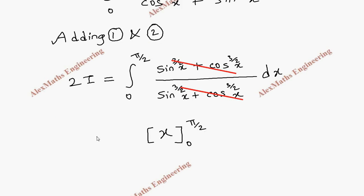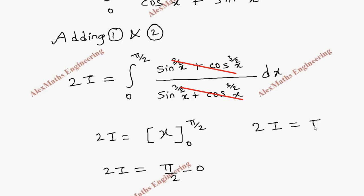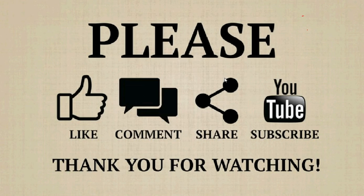So 2I equals π/2 minus 0, which gives 2I equals π/2, and therefore I equals π/4.